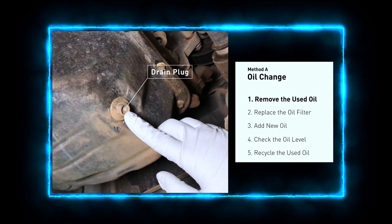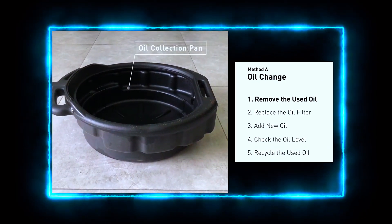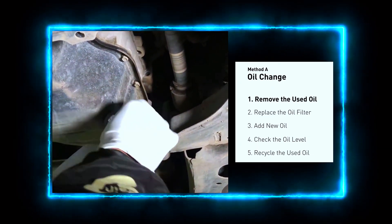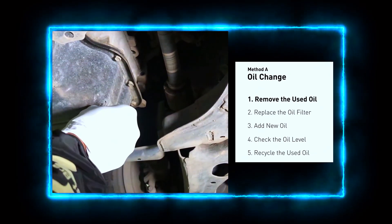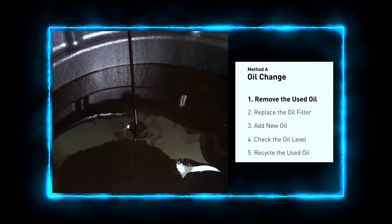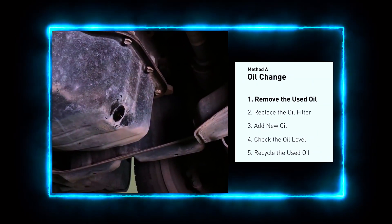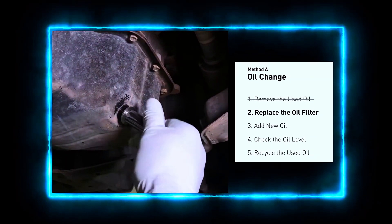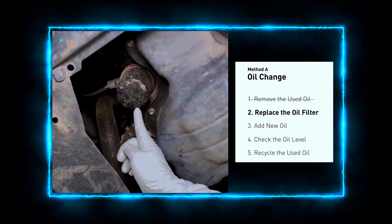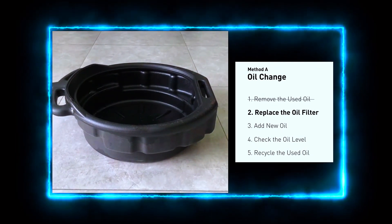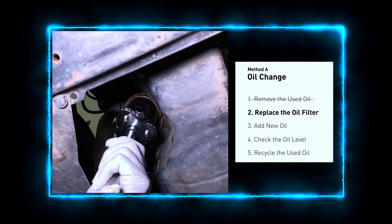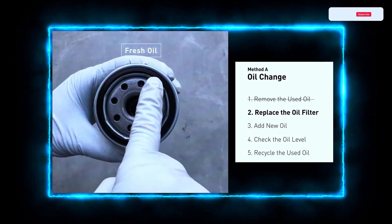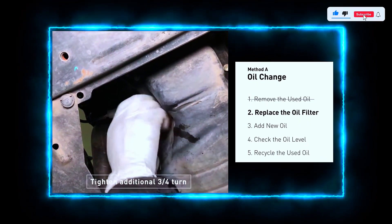Start by locating the oil drain plug — it's usually on the bottom of the engine. Use your socket set to loosen the plug and place an oil drain pan underneath to catch the old oil. Carefully remove the drain plug and let the old oil drain completely. While the oil is draining, inspect the plug and washer for any signs of wear or damage. Next, let's replace the oil filter — using your oil filter wrench, loosen and remove the old filter. Before installing the new one, lubricate the rubber gasket with a bit of fresh oil.